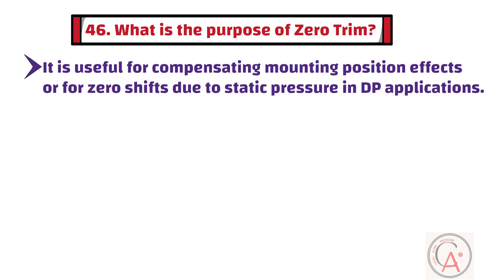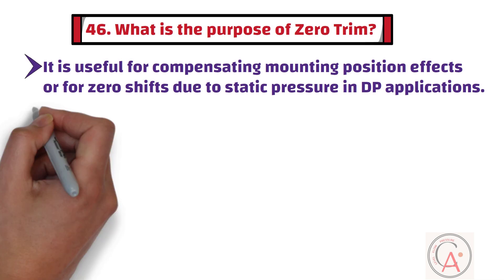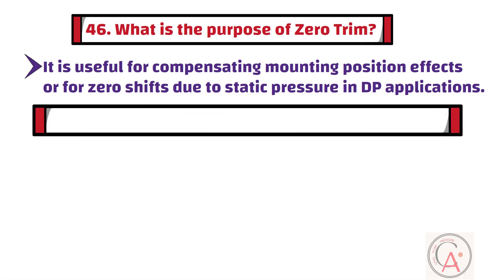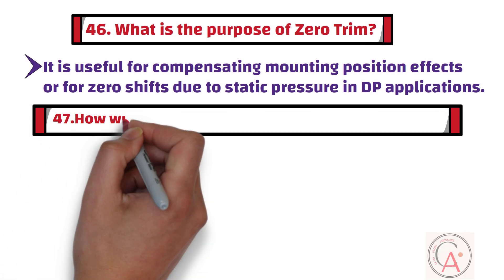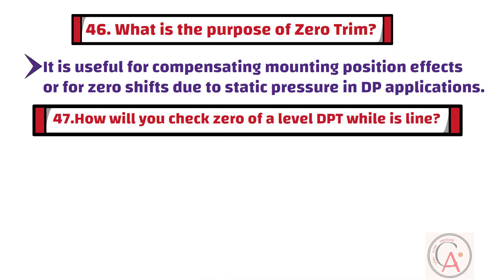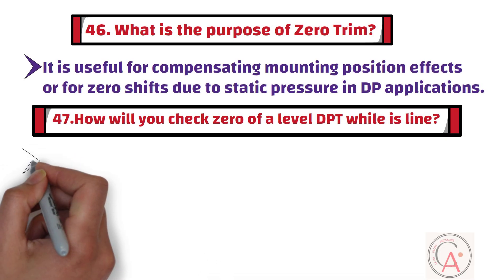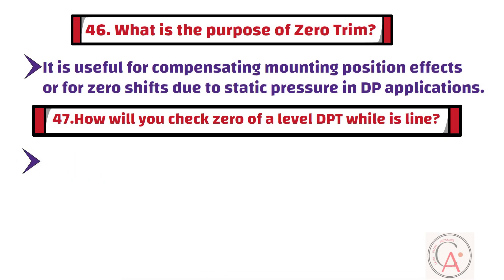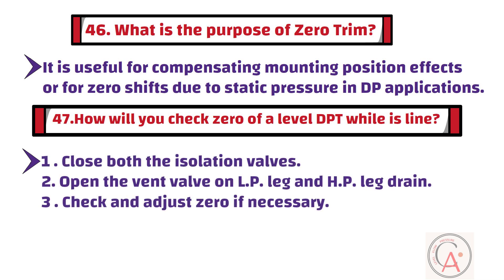Question 47: How will you check zero of a level DP transmitter while it is in line? To check the zero of the DP transmitter, first close both the isolation valves. Then open the vent valve on the LP leg and HP leg drain. Finally, check and adjust zero if necessary.